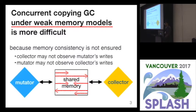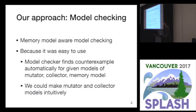because memory consistency is not ensured. So a collector may not observe a mutator's write, and the mutator may not observe the collector's write. To be confident in correctness of concurrent copying garbage collection under weak memory, we use memory-model-aware model checking because it was easy to use. Once we write a model of mutator, collector, and memory model, the model checker automatically checks and finds counterexamples. And we could make mutator and collector models intuitively.